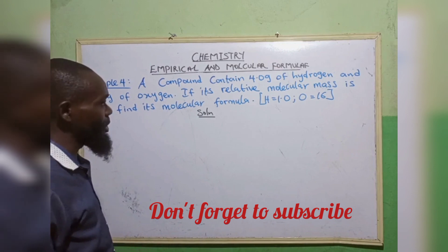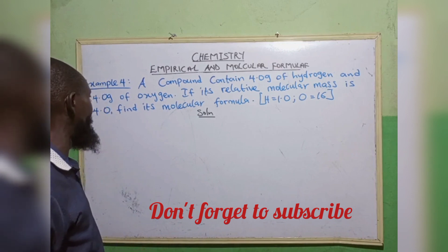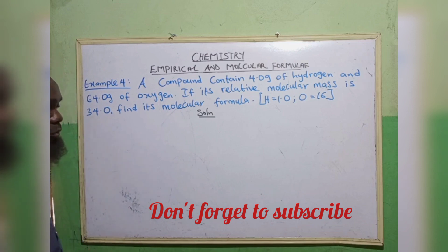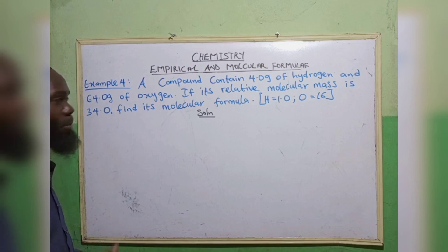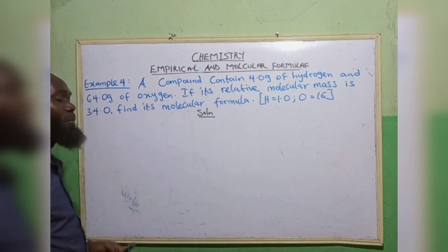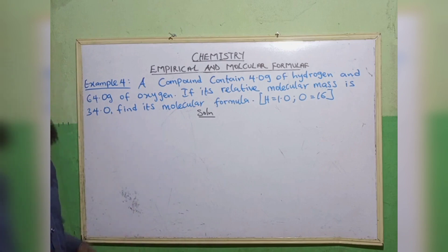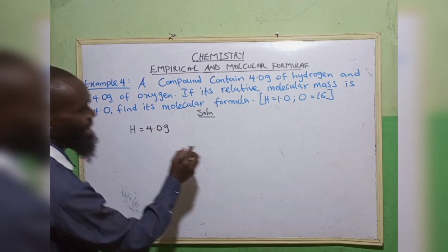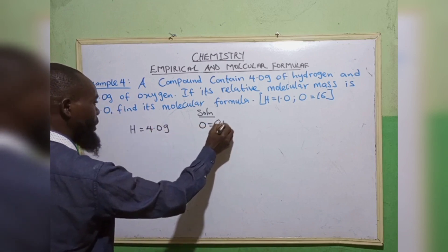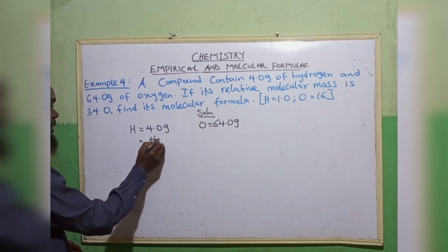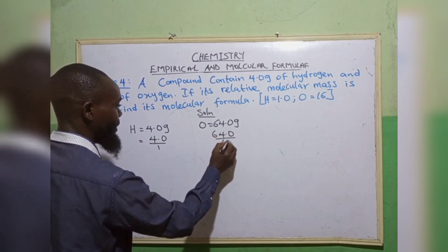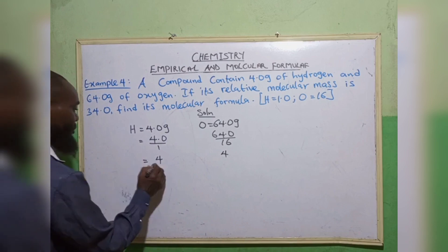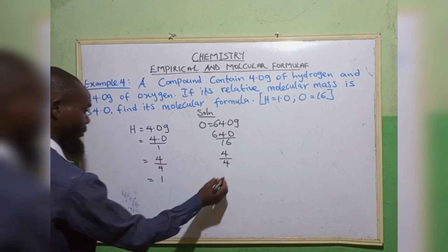Example 4: a compound contains 4.0 grams of hydrogen and 64.0 grams of oxygen. If its relative molecular mass is 34.0, find its molecular formula. We first calculate the empirical formula. In this case, we are given mass and not percentages, so we use the actual mass as it is. We divide by the atomic mass: 4.0 divided by 1 for hydrogen, and 64.0 divided by 16 for oxygen. Here we have 4 and 4.0, so dividing by the smallest number, both give 1. So the empirical formula is HO.